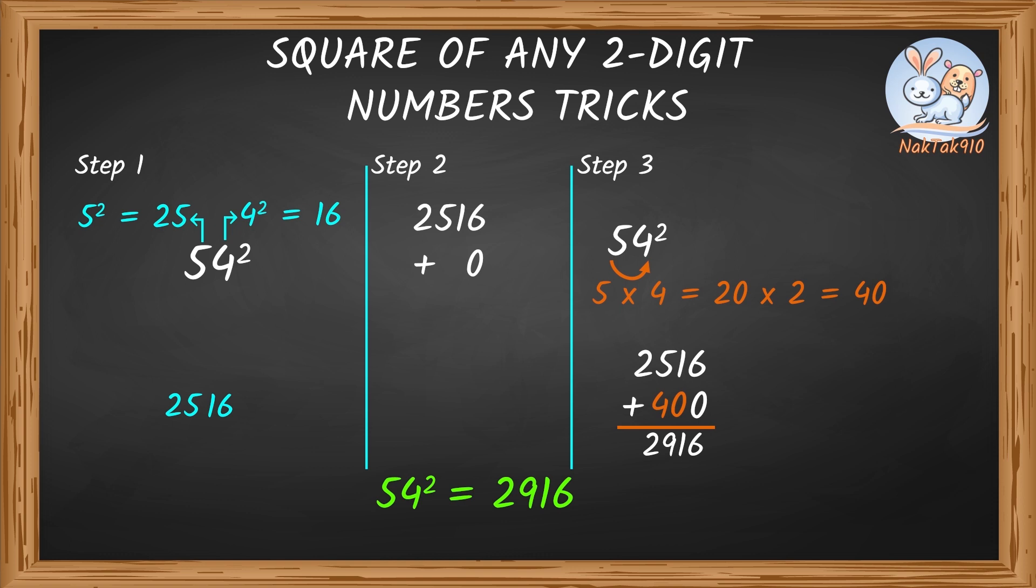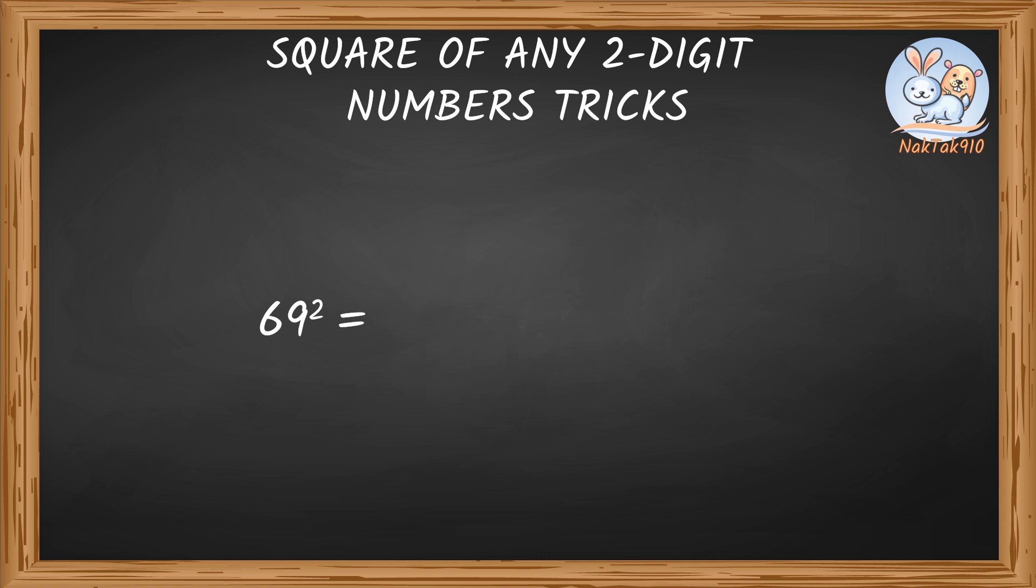Does this work for a square of any number? Yup, it does. Try it yourself. Find 69 square. Square of first number, 6 is 36. Square of second number, 9 is 81. So let's put that down. 3681.